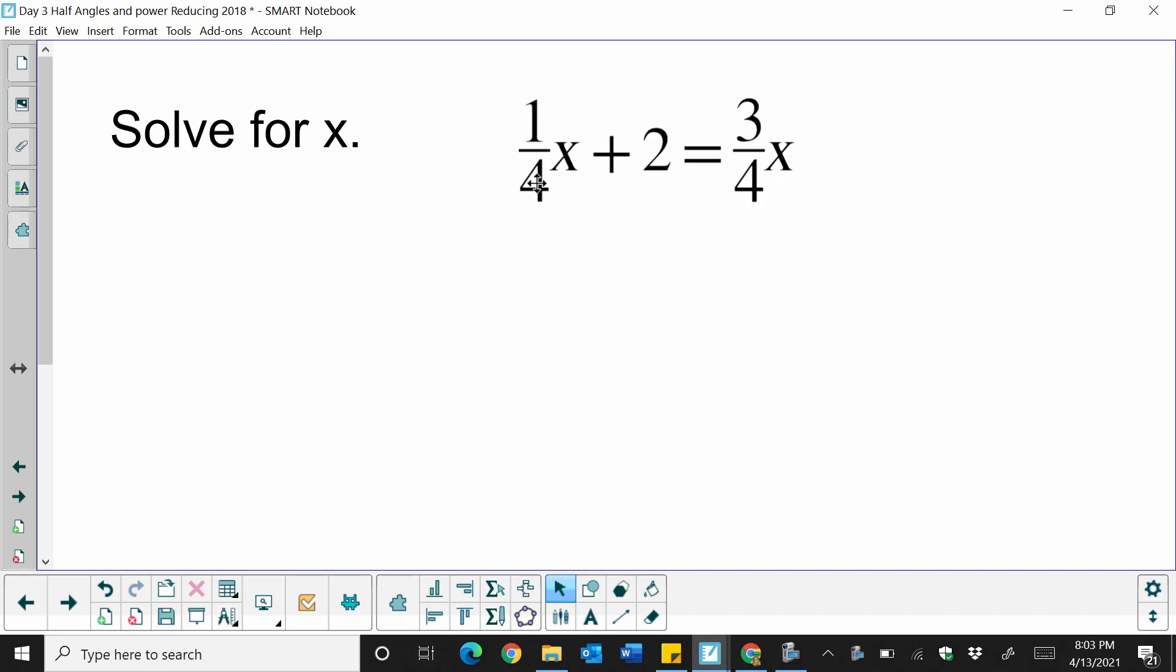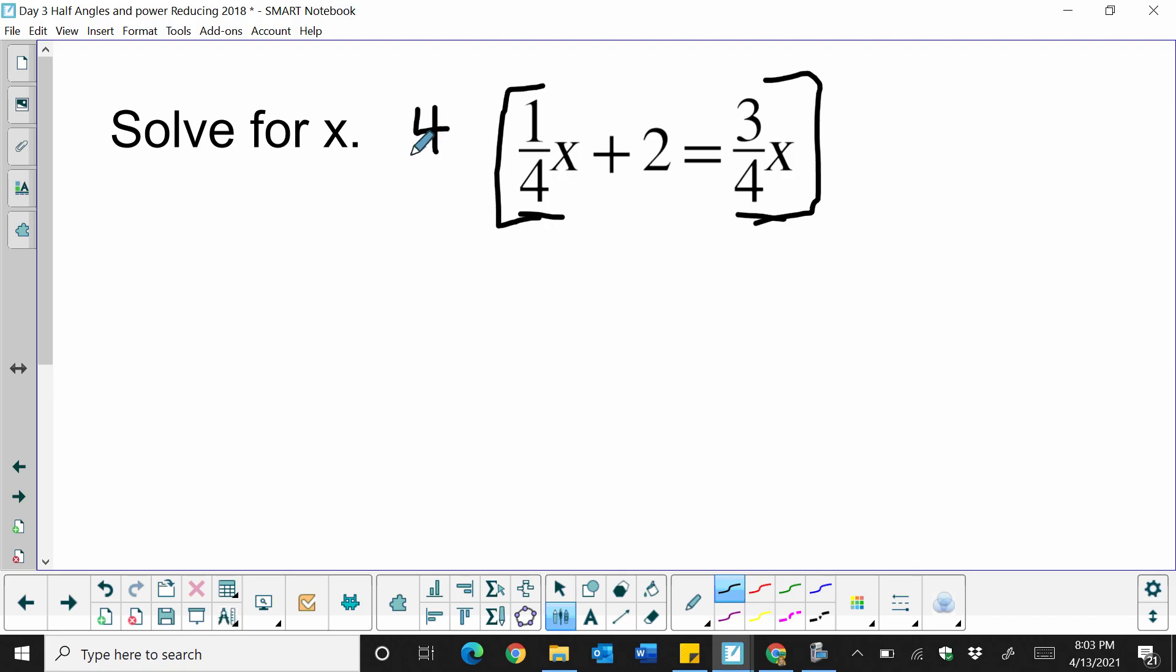So we have 1/4x plus 2 is equal to 3/4x. The first thing you want to do is look at your denominators, and my common denominator is just simply 4. So once you identify that, take your equation, and you're going to multiply each term by 4 over 1, which is just the whole number 4, and you're going to distribute to each term in your equation. So once we do that, you'll see what's going to happen.